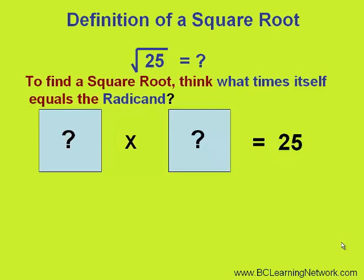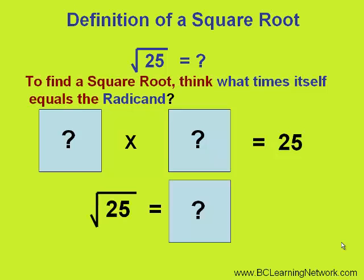To find a square root, you think: what times itself equals the radicand? Or in this case, what times itself equals 25? The square root of 25 is equal to that value, and that value is 5, because 5 times 5 equals 25.